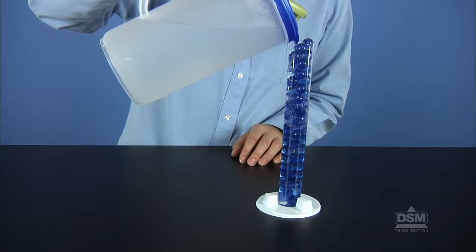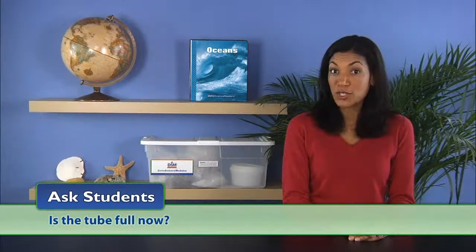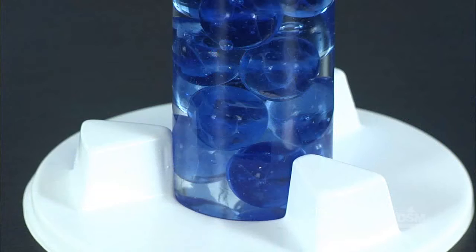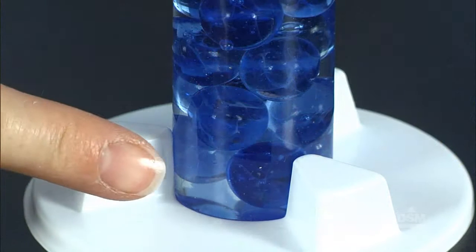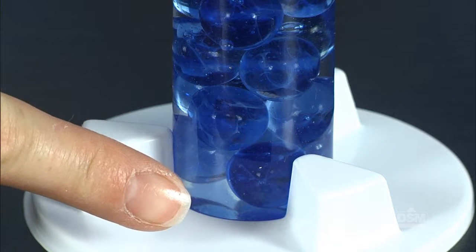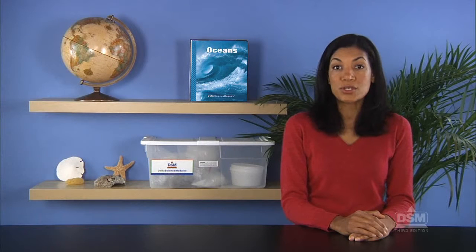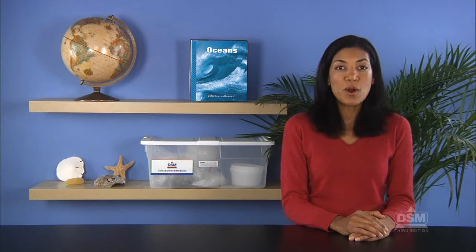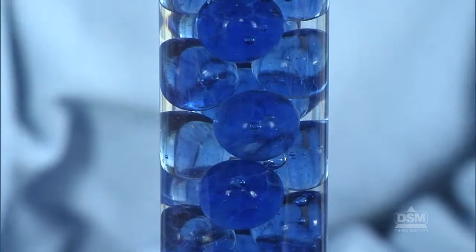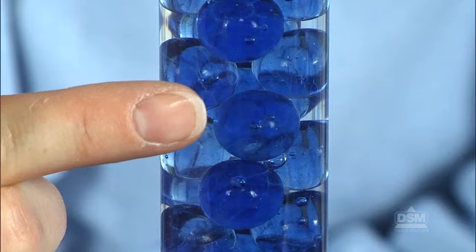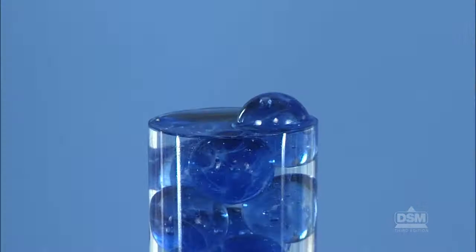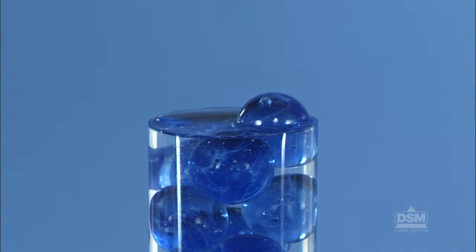Hold up the tube again and ask, 'Is the tube full now?' Students should see that the spaces between the marbles are now filled with water, and the tube is full. This tube is a model of how salt dissolves in water to form salt water. The blue marbles represent water molecules, and the water between the marbles represents particles of dissolved salt filling in the spaces between the molecules of water.